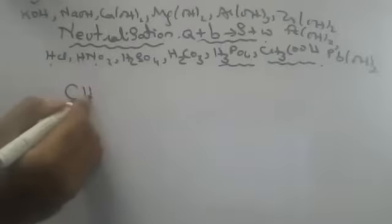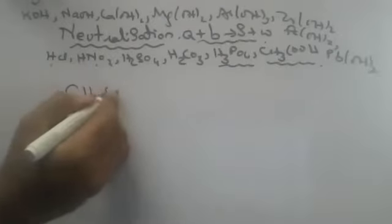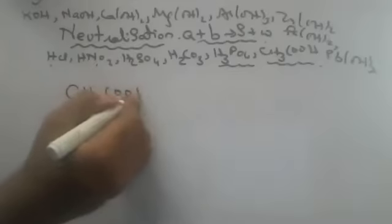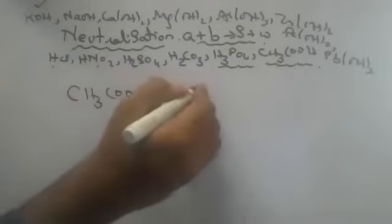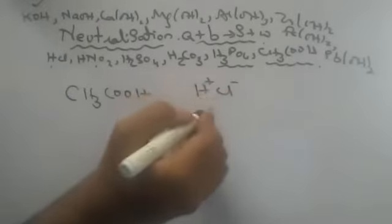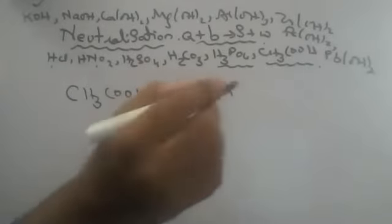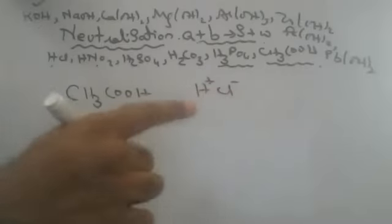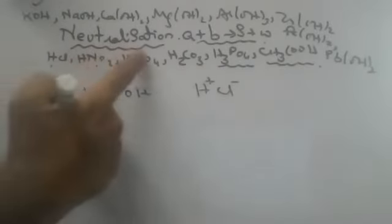Coming to acetic acid, children. Acetic acid is not like CH₃COOH in the way mineral acids work. Normally when we do HCl, H is plus and Cl minus — the positive ion comes first, negative comes next. This is true for all mineral acids. These are called mineral acids.